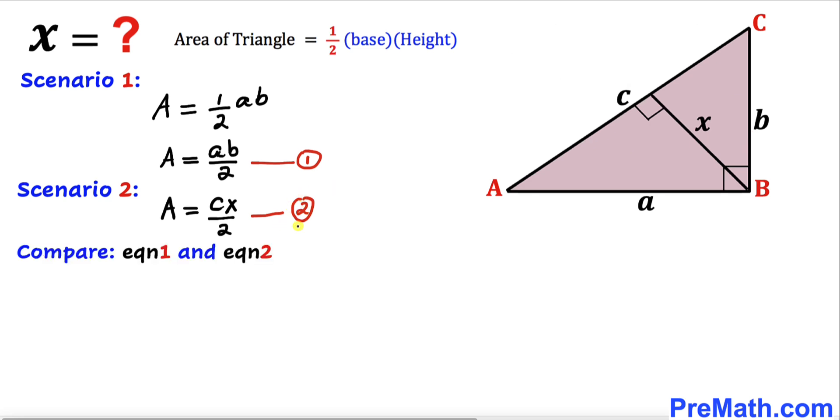Now let's compare these two equations 1 and 2. So we are going to get CX divided by 2 equals A times B divided by 2. We can see that the 2s cancel out on both sides.